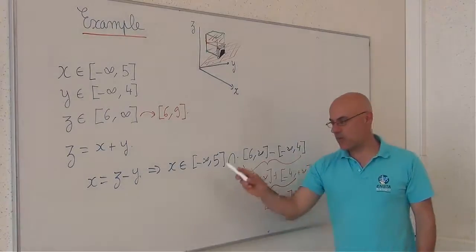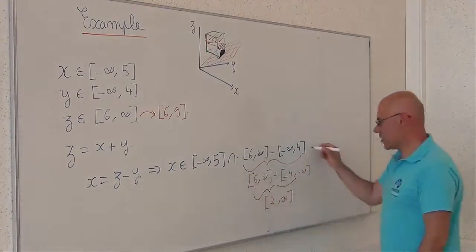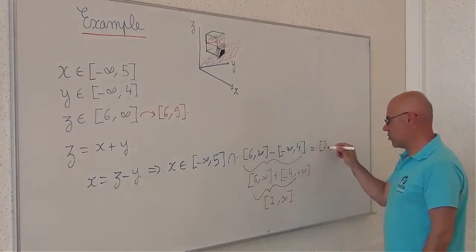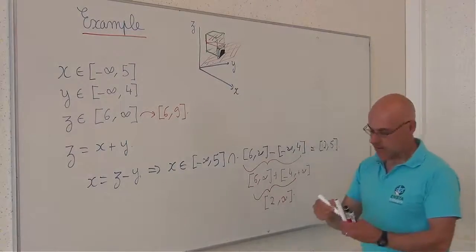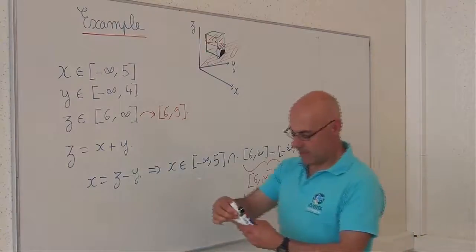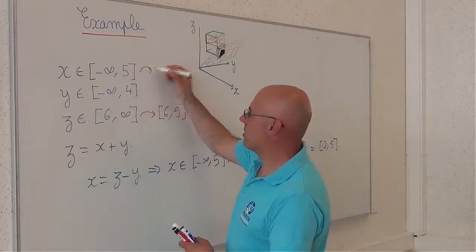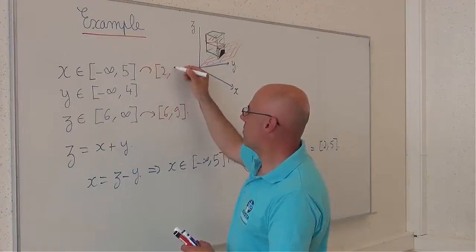I compute the intersection. And I obtain 2, 5. It means that x has been contracted to 2, 5.